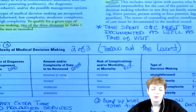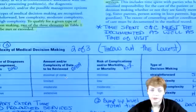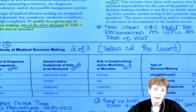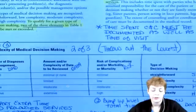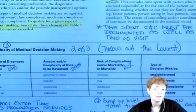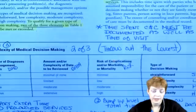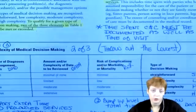On those score sheets for medical decision-making, there's a whole point system — was the test from the radiology section, was it from the lab section — and they come up with a scoring system to figure out if it's minimal, limited, moderate, or extensive. On the board exam, they tend to give you the words, the language to plug in.